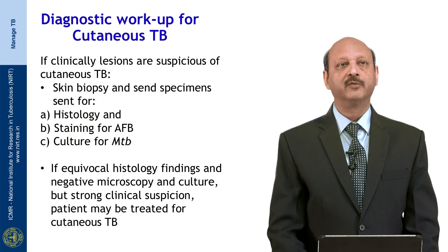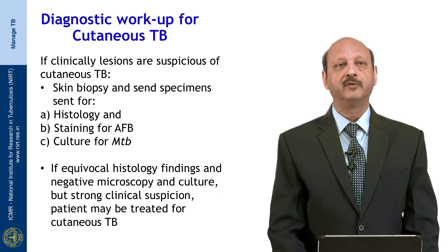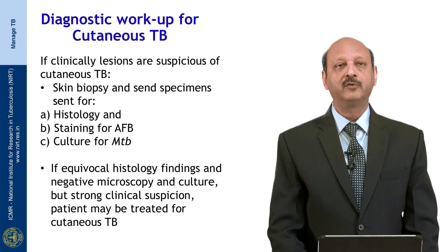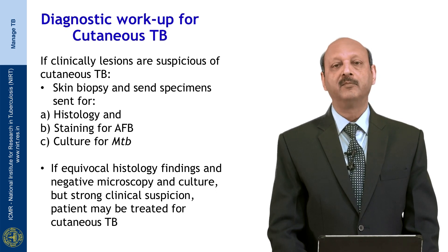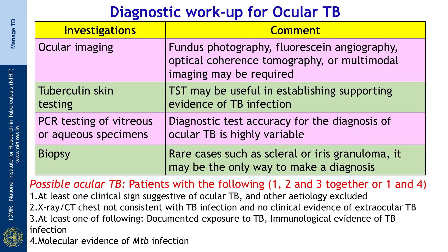For cutaneous tuberculosis, if lesions are clinically suspicious, skin biopsy should be done and the specimen sent for histopathology, staining for AFB smear and culture. If histological findings are present but microscopy and culture are negative — which very commonly happens in clinical practice — but there is a strong clinical suspicion, the patient may be treated for cutaneous tuberculosis.